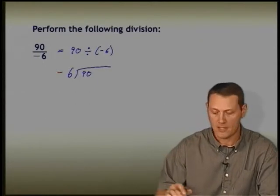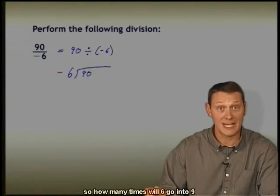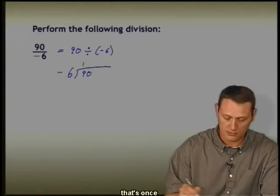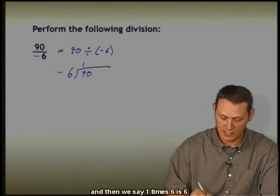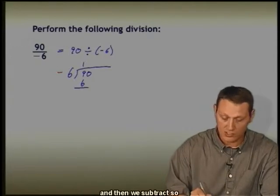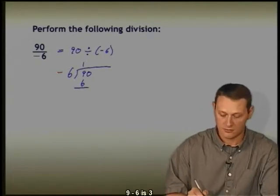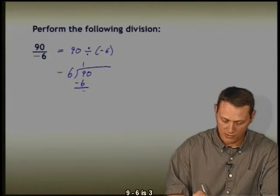But first, let's just ignore it. So how many times will 6 go into 9? That's once. And then we say 1 times 6 is 6, and then we subtract. So 9 minus 6 is 3.